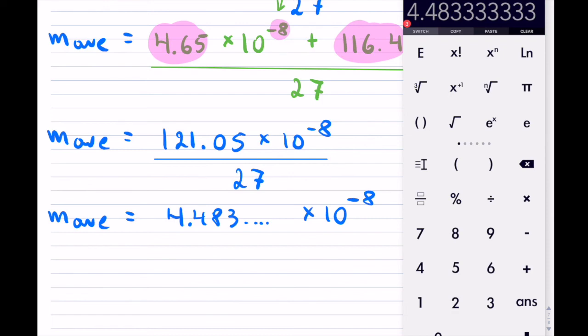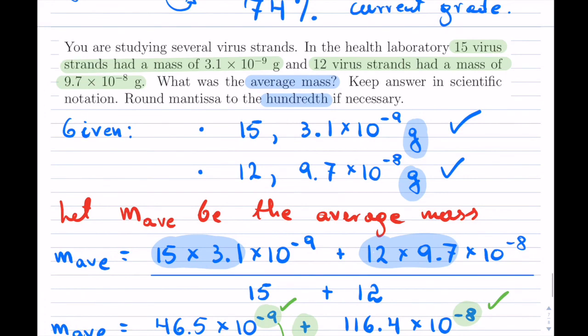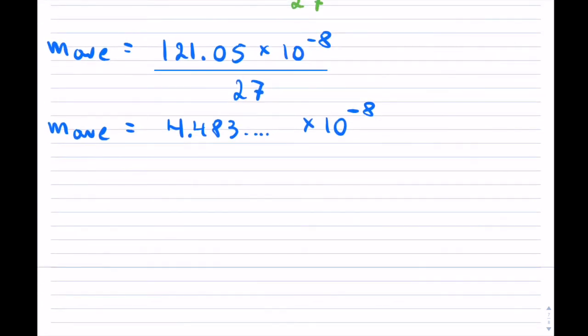Notice there is no scientific notation at the bottom, so the exponent just stays as it is. Now they did want the answer rounded to the hundredth for the mantissa, so if that's the case to the hundredth, that will turn out to be 4.48 times 10^-8 grams.